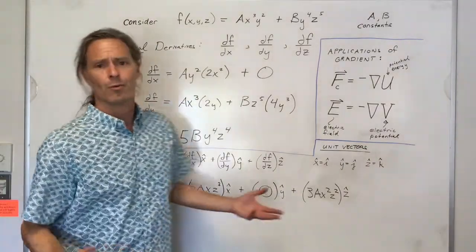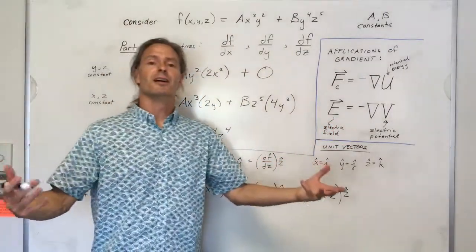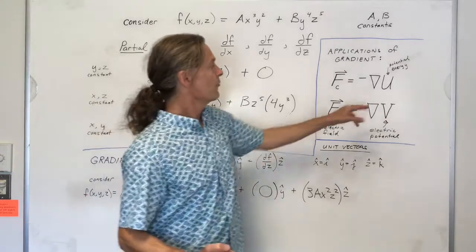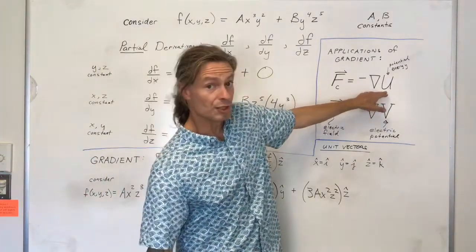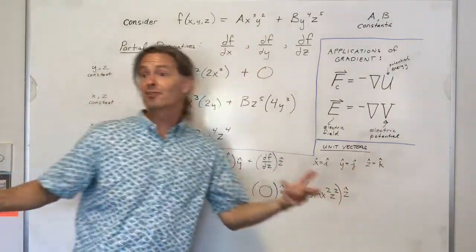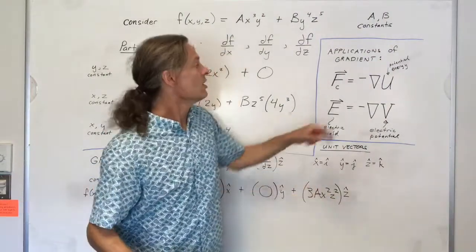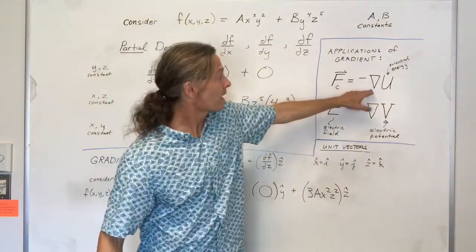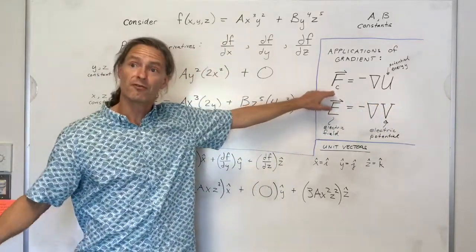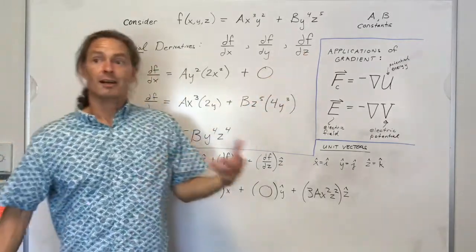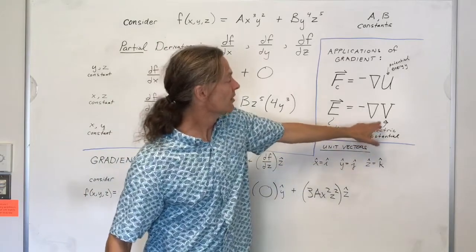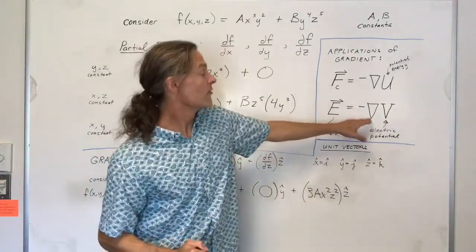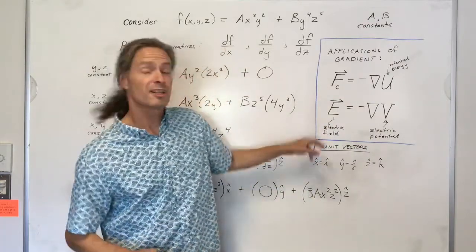Why do we care about the gradient? There are lots of reasons. In physics, one important application: if we know some potential energy function u — such as gravitational, electric, or spring potential energy — we can take the negative of the gradient of that potential energy function and get the associated conservative force. I'll go over examples of that in a separate video.